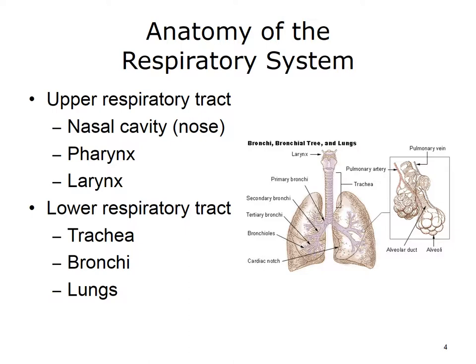The larynx, or voice box, connects the pharynx with the trachea. It also contains the vocal cords. The trachea, also known as the windpipe, is a 10 to 12 centimeter long tube that extends into the chest and serves as a passageway for air into the bronchi. It remains open continuously.